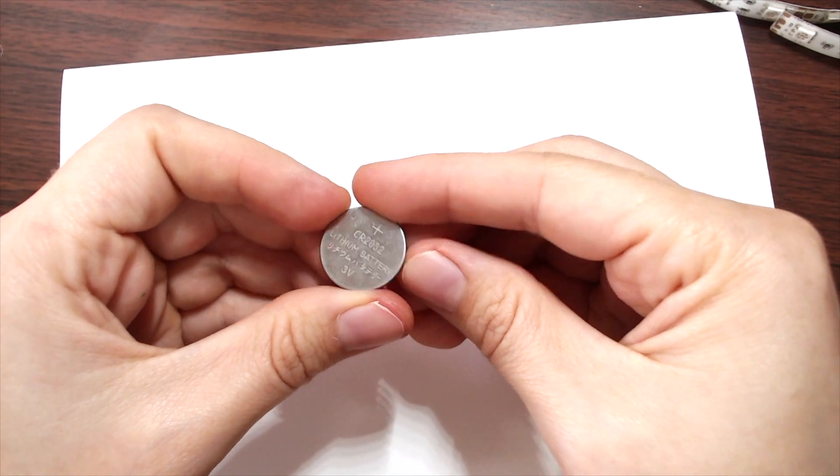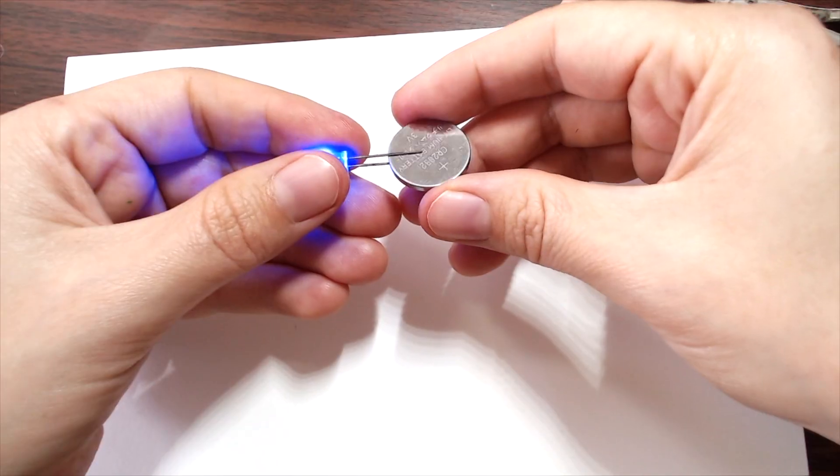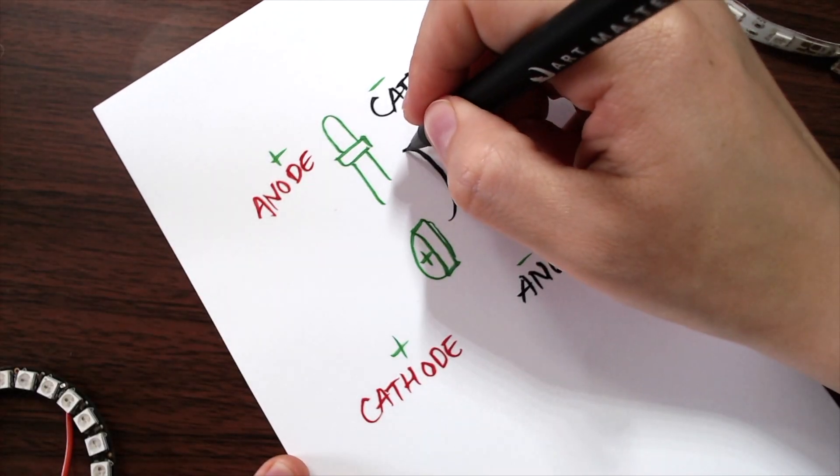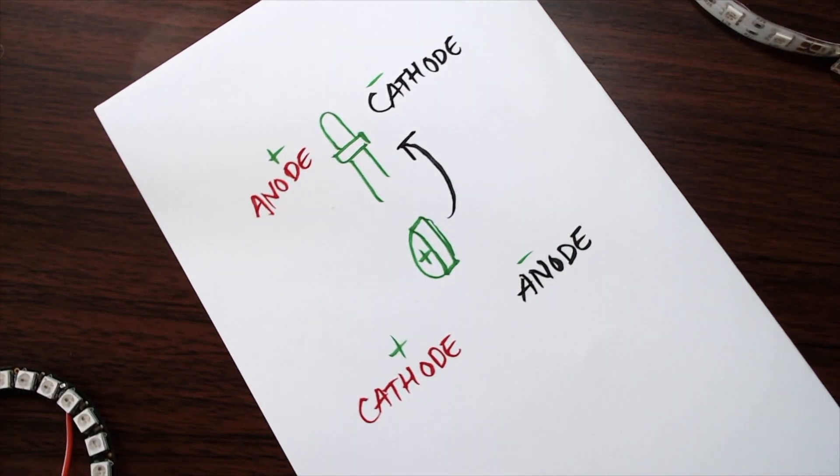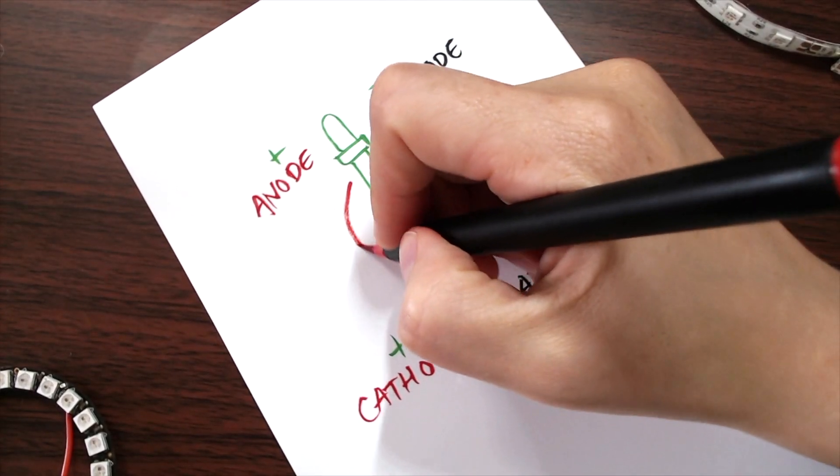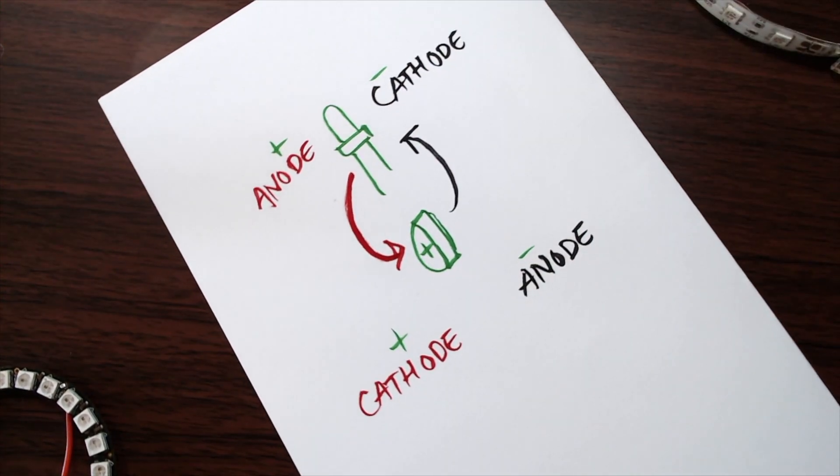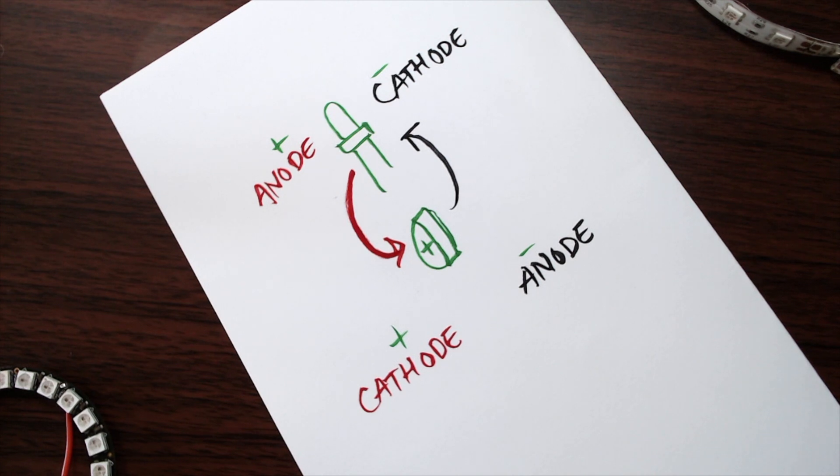When you connect an LED to a battery, you're hooking up positive to positive and ground to ground. It makes sense the way they match up. What's happening inside the circuit is that electrons are flowing from the ground side of the battery to the negative leg of the LED, through the device, and out through the positive leg to the positive side of the battery.